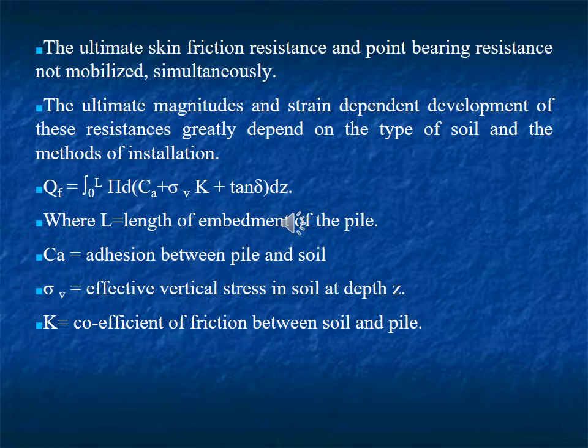The skin friction resistance is given by: Q_f = integral from 0 to L of (π·d·(C_a + σ_v·k·tan δ)) dz, where L is the length of embedment of the pile, C_a is the adhesion between pile and soil, σ_v is the effective vertical stress in the soil at depth z, and k is the coefficient of earth pressure between soil and pile.